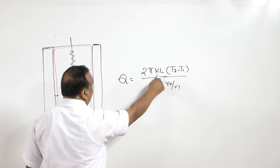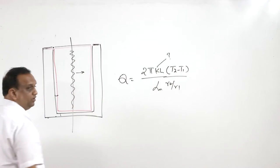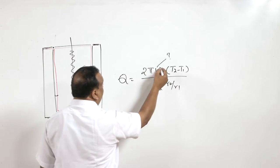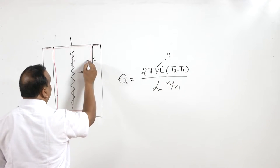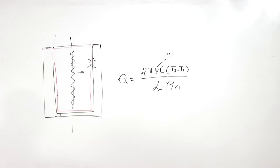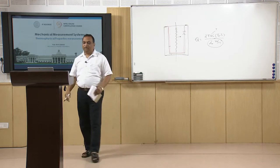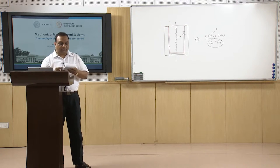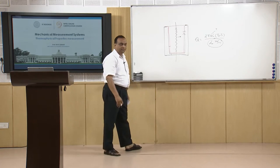When liquid is filled in the annular gap and a heater is placed at the center, radial heat transfer takes place. The equation for radial heat transfer in a cylinder is: Q = 2πkL(T2 − T1) / ln(R2/R1). Here Q is known from V·I heating, L is the length, temperature difference is measured by thermocouples, and the dimensions R1 and R2 are known, allowing thermal conductivity k to be determined. This method can also be used for gases.